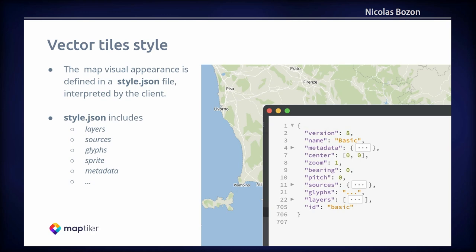There is no style in vector tiles, so we want to give them a style that will define the visual appearance of the map. The map style is defined in a style.json file whose syntax is based on the Mapbox GL style specification. This file contains various sections such as name, metadata, sources, glyphs, etc. Today we will mostly look at the layers section where map layers and their style properties are defined. The style can quickly become quite verbose, so a good practice is to keep the number of layers — and thus the number of lines — as low as possible.